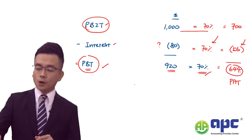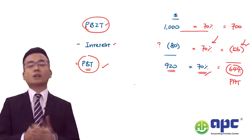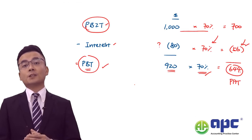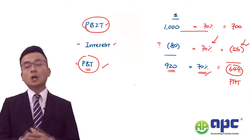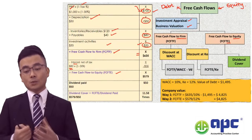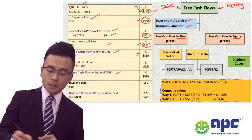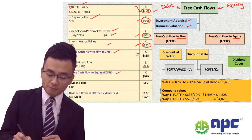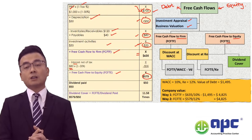This is why we subtract only $56 — that is, $80 × (1 − 30%). So we have profit after tax of $644, adjusted for depreciation of $50, minus $80 for working capital, minus $35 for capex, which gives the free cash flows to equity of $579.